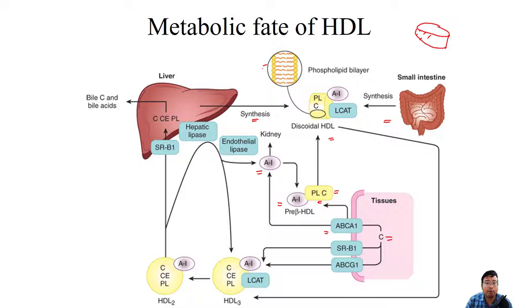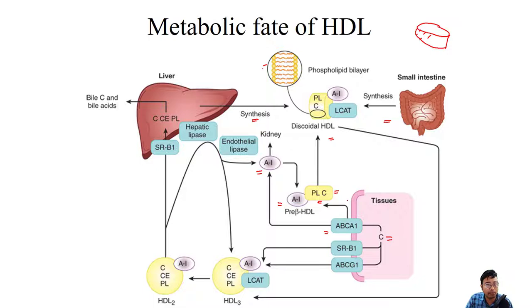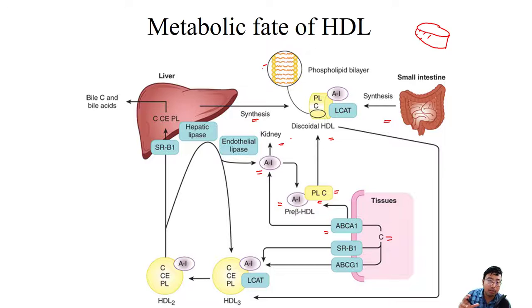The difference between ApoA1 and pre-beta HDL is the lipid component: ApoA1 is a protein, and when combined with lipid it becomes a lipoprotein. The lipid component comes from extra-hepatic tissue. This is one pathway where ApoA1 is converted to pre-beta HDL and then to discoidal HDL. Otherwise ApoA1 can be directly excreted, but that is a one-way mechanism not concerned with the cyclic motion of HDL.